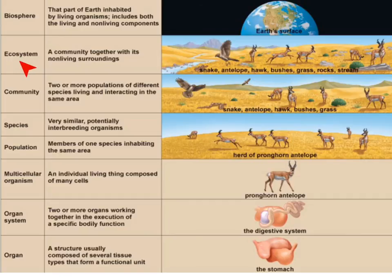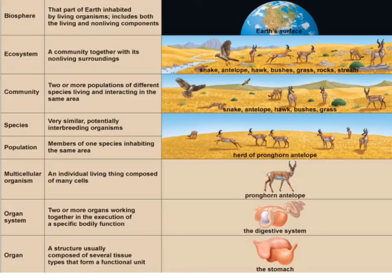Finally, we have the ecosystem, which is the community and its non-living surroundings — all those living organisms plus the rocks and the stream. That's an ecosystem. And then we can think about the whole Earth biosphere, with all the ecosystems combined, which is the largest organizational unit of living things.